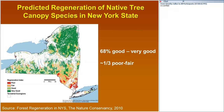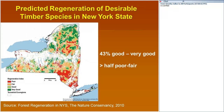In 2010, the Nature Conservancy did a statewide assessment based on forest inventory data and looked at predicted regeneration of native tree canopy species in New York. Overall, 68% of forest inventory plots were in good to very good condition, and only about a third were in the poor-to-fair category, mostly in southeastern New York and Long Island. But looking at predicted regeneration of desirable timber species — things like oak, sugar maple, and ash — only 43% of plots had a very good rating, and over half the sites statewide were ranked poor or fair, with widespread problems across southern New York and even parts of the Adirondacks.